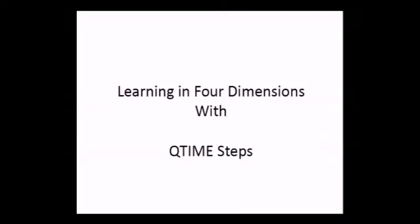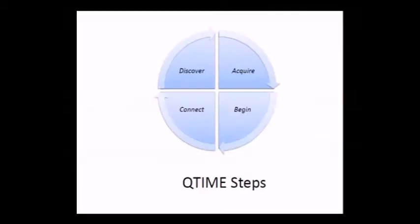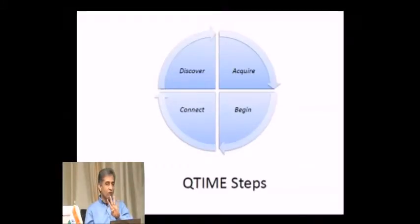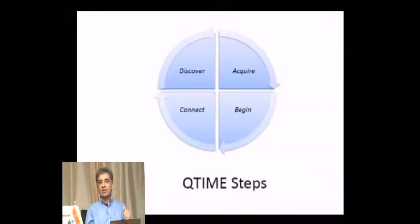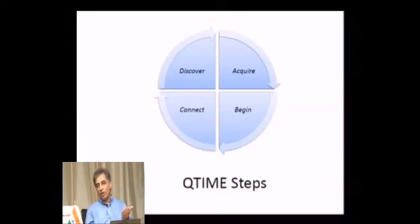How do we learn in those four dimensions? What steps do you take? Q-time learning advocates Q-time steps: Acquire, Begin, Connect, and Discover. You don't have to start anywhere in particular — you can start with Discover, Acquire, Begin, Connect, or Connect, Discover, Acquire, Begin. It doesn't matter how you take the steps, but it has to be cyclical with no starting point. This is an important concept in Q-time learning.